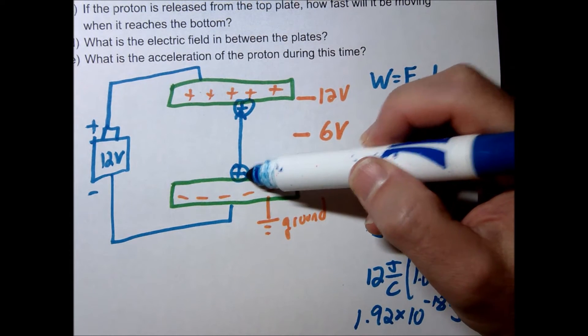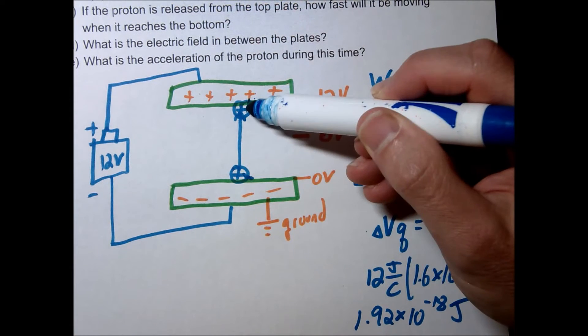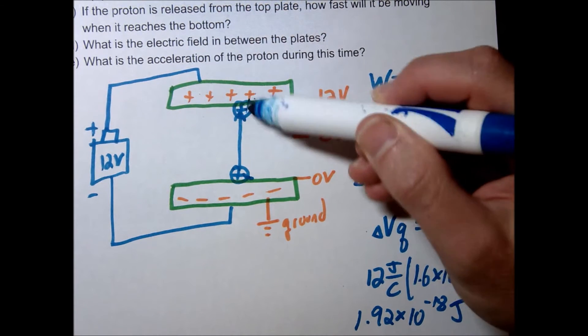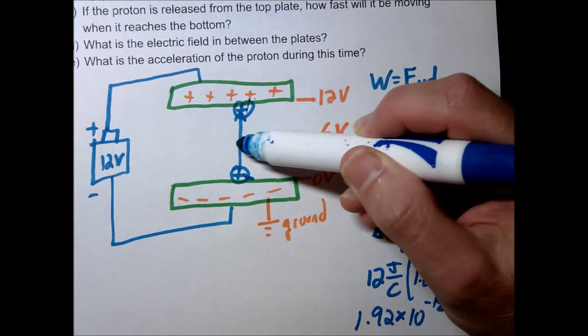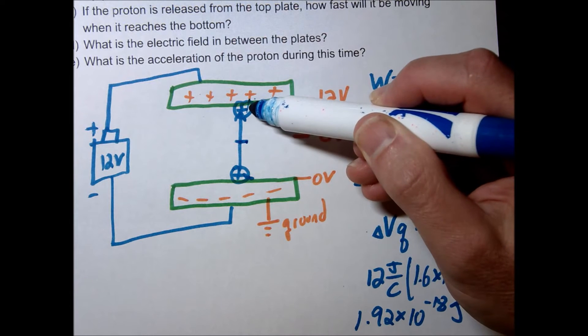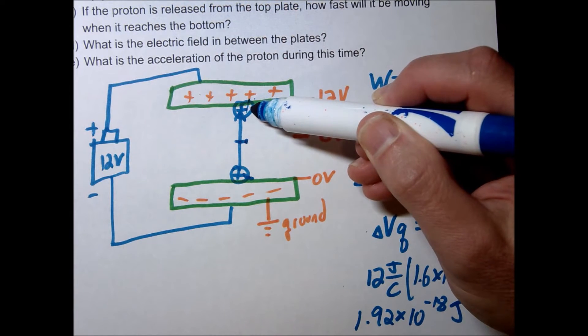So in other words, to move it from here up to here, that's how much work it would take me. That's also how much potential energy the charge would now have at that point. Notice if I started in the middle, and I moved it from here to here, it would take half as much work to get it to move it up to this point.